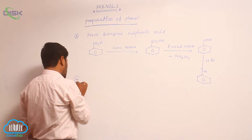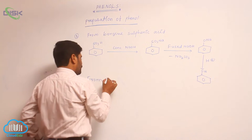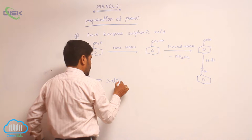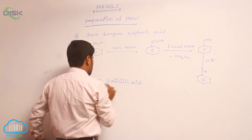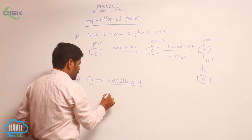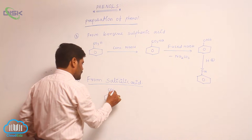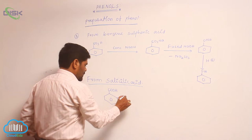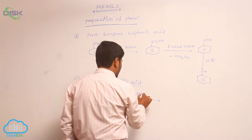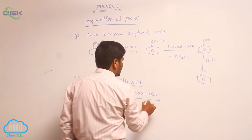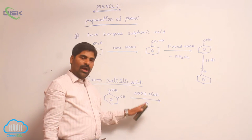The fourth method is from salicylic acid — just decarboxylation of salicylic acid in the presence of soda lime. Soda lime is a mixture of sodium hydroxide and calcium oxide.